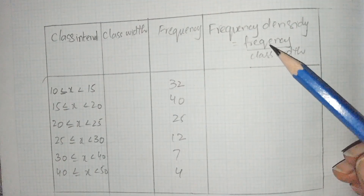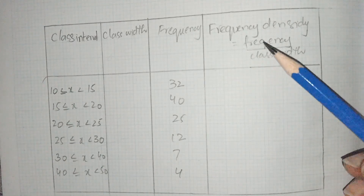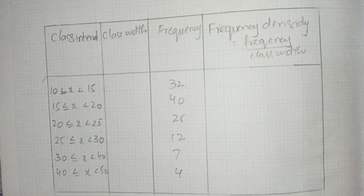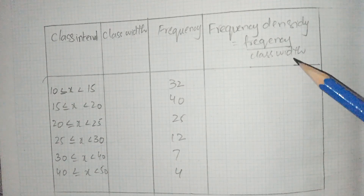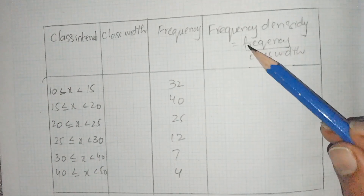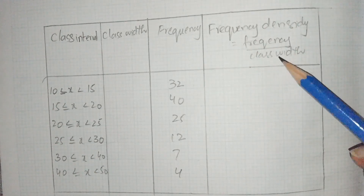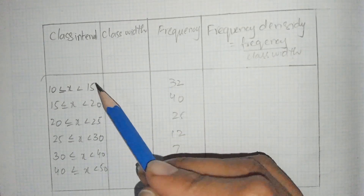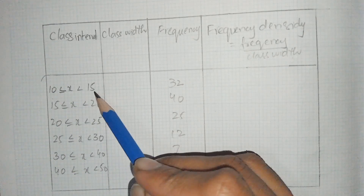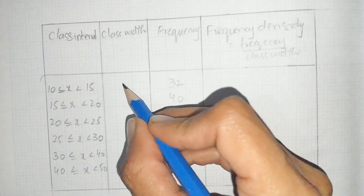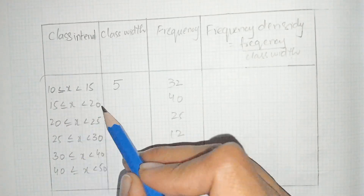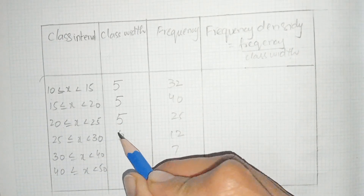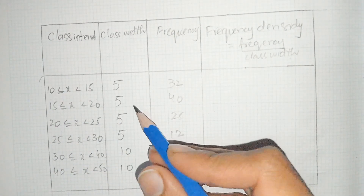As discussed in the previous video on questions four and five, there are two methods to draw a histogram: one using the height of the rectangle, and the second using frequency densities. The frequency density formula is frequency divided by class width. The class width is found by subtracting: 15 minus 10 gives 5, 20 minus 15 gives 5, and so on — giving class widths of 5, 5, 5, 5, 10, and 10.